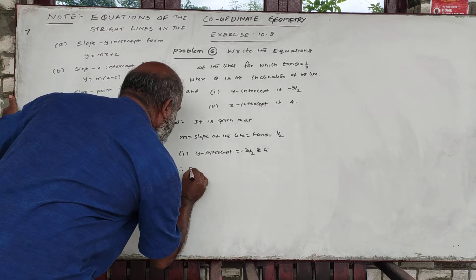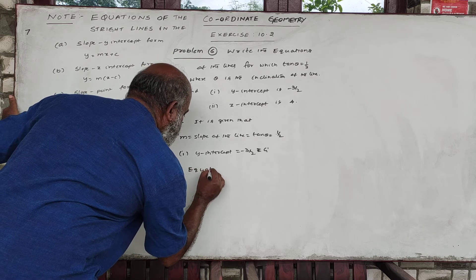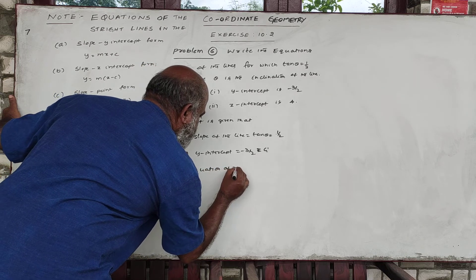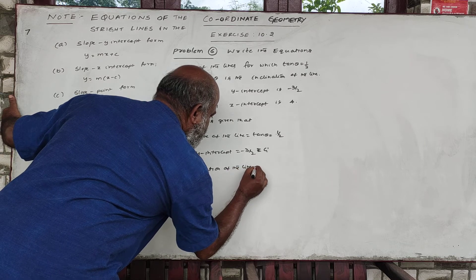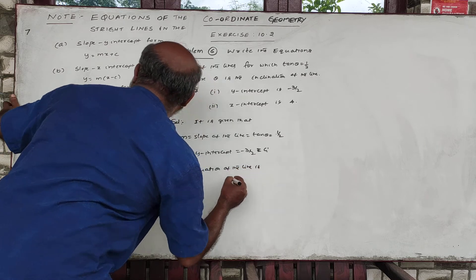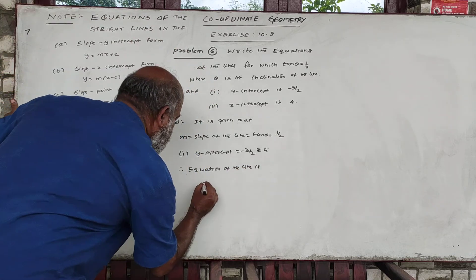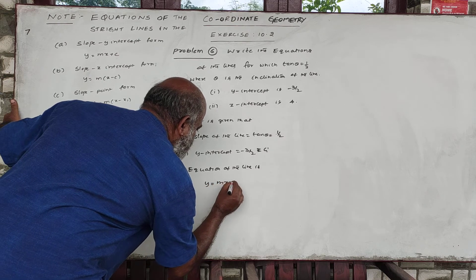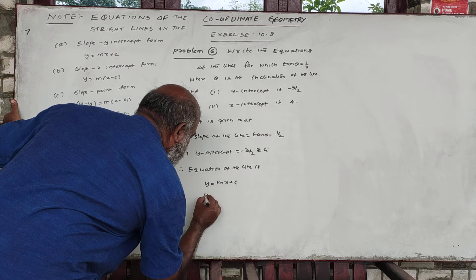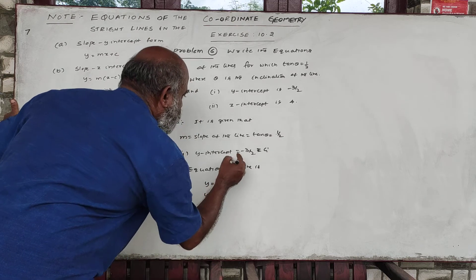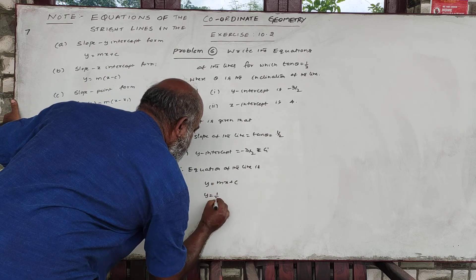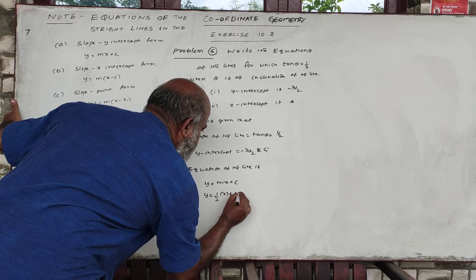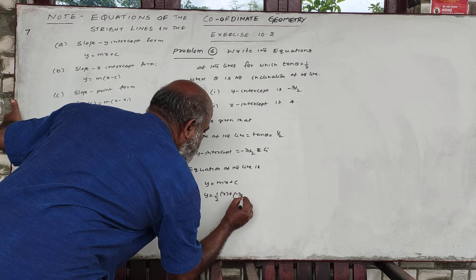Therefore, the equation of the line is y equals mx plus c. Y is equal to m is half, into x, plus c is minus 3 by 2.